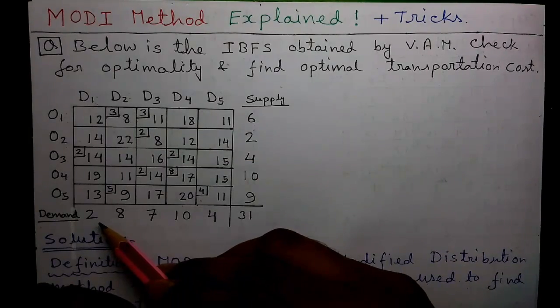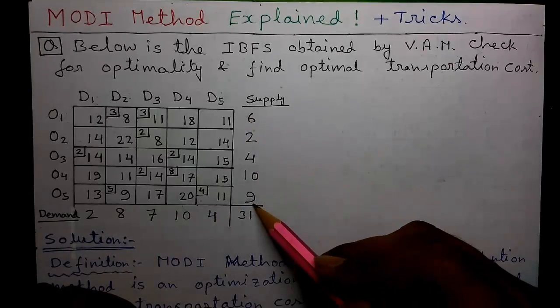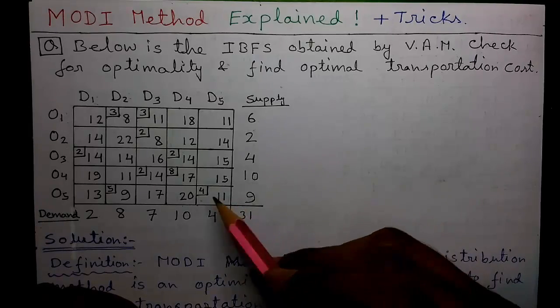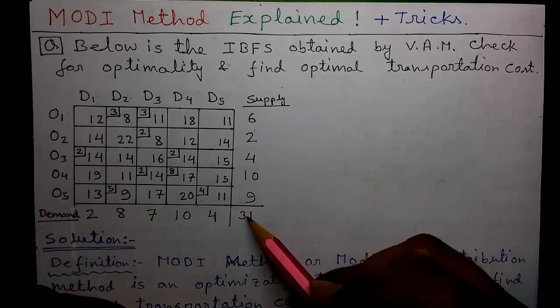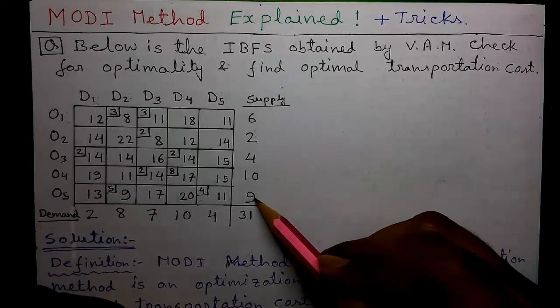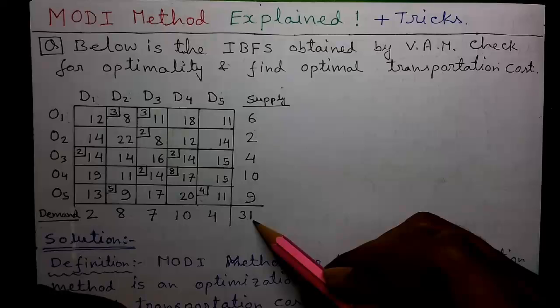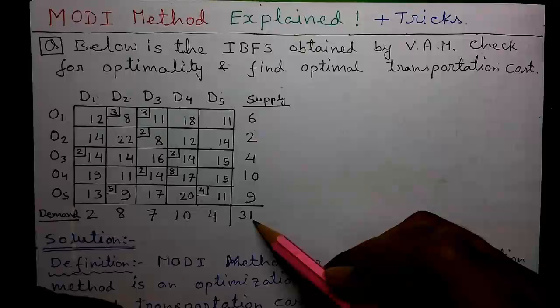Remember, to be able to solve a transportation problem, the sum of all demands and sum of all supplies should be equal. So in our case, sum of all demands is 2 plus 8 plus 7 plus 10 plus 4 equals to 31. And sum of all supplies is 6 plus 2 plus 4 plus 10 plus 9 equals to 31. In transportation problem, where the sum of demand is not equal to sum of supply, is called an unbalanced transportation problem. There is a special technique for solving unbalanced transportation problem. I have a video on that also. Link to that is given in the description below.